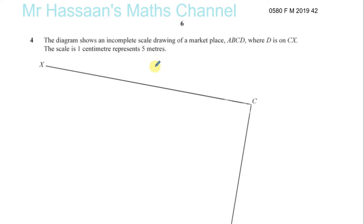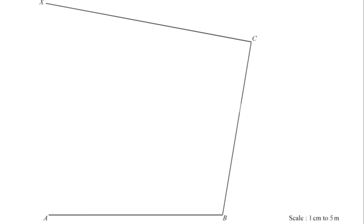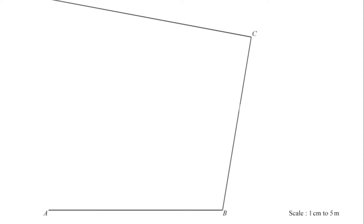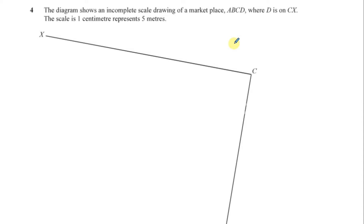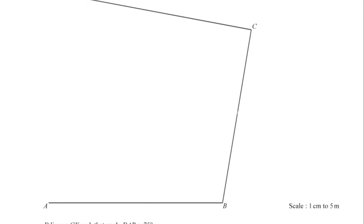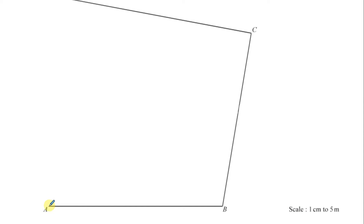Here we have question number 4 from February/March 2019, Paper 4, question 2. The diagram shows an incomplete scale drawing of a marketplace ABCD. D is missing — D is somewhere on the line CX. The scale is 1cm represents 5m, so 1cm in the diagram is 5m in real life.